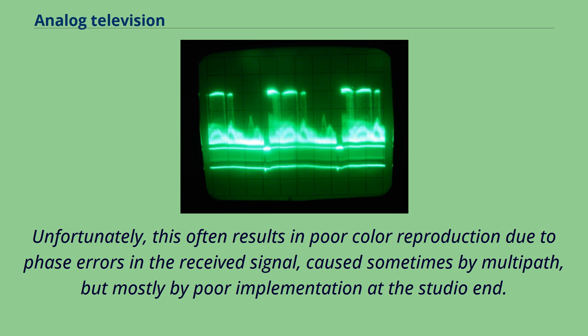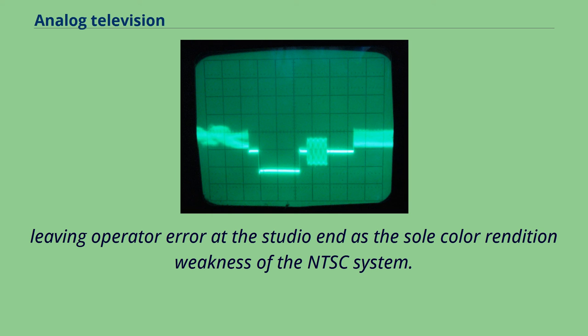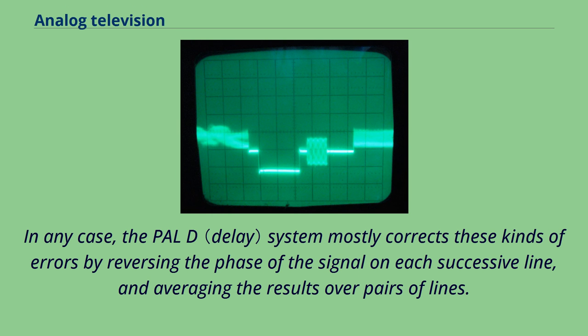In any case, the PAL system mostly corrects these kinds of errors by reversing the phase of the signal on each successive line, and averaging the results over pairs of lines. This process is achieved by the use of a 1H duration delay line. Phase shift errors between successive lines are therefore cancelled out.